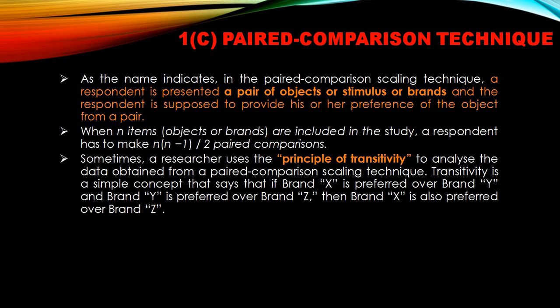In the paired comparison technique, a respondent is presented a pair of objects or brands and is supposed to provide their preference from that pair. When n items or brands are included in the study, a respondent has to make n × (n−1) / 2 paired comparisons. So if I have 10 objects or brands, the number of paired comparisons needed is 10 × 9 / 2, which is 45 paired comparisons.